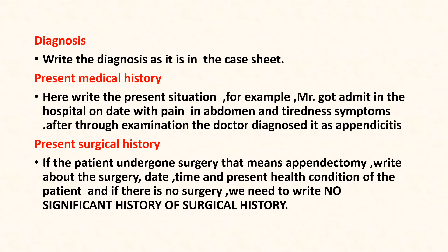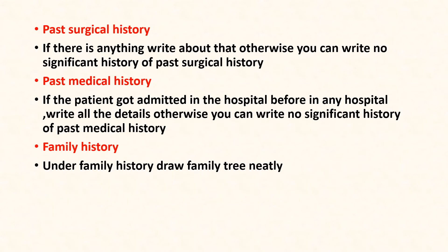After present medical history, write the present surgical history. If there is any present surgical history, include details about the surgical procedure and when it was done. This information can be obtained from the case sheet or from nurses working in the ward. If there is no surgical history, you can write 'no significant history of surgical history.' Similarly, for past surgical history, write all details about any previous surgeries, or write 'no significant history of past surgical history' if there are none.